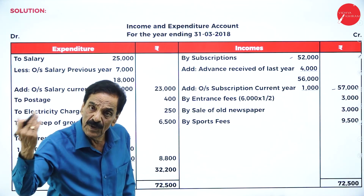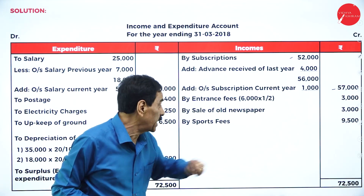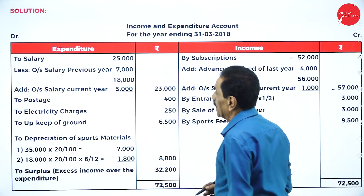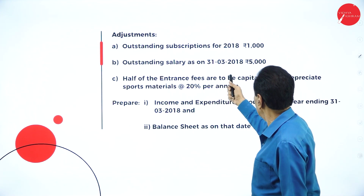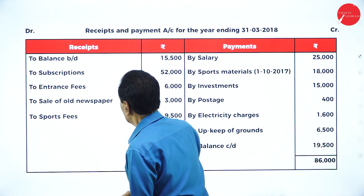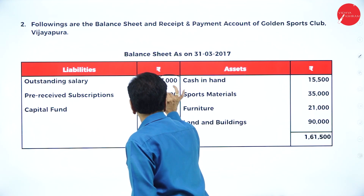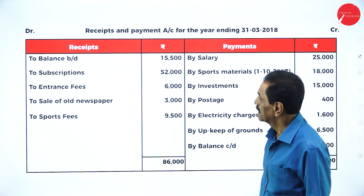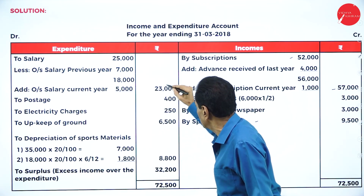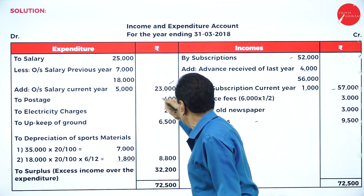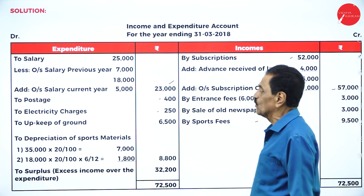Entrance fee: half is capitalized, so 6,000 divided by half is 3,000 revenue. Sale of old newspapers is income, sports fees is income. Salary is 25,000; outstanding salary of the previous year is 7,000 and current year is 5,000, giving total salary of 23,000 adjusted. Postage is expenditure at 400, electricity charges at 250, upkeep of ground at 650.